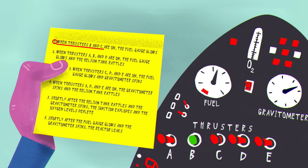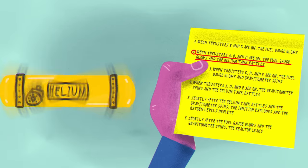1. When thrusters B and C are on, the fuel gauge glows. 2. When thrusters A, B, and D are on, the fuel gauge glows, and the helium tank rattles.